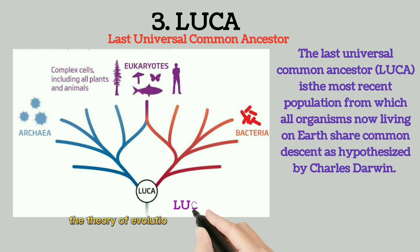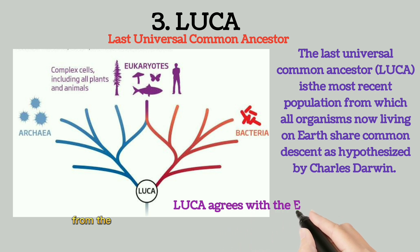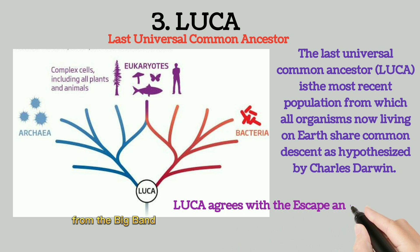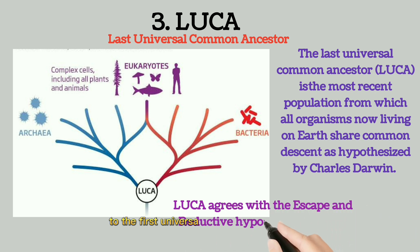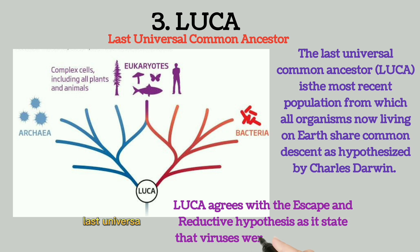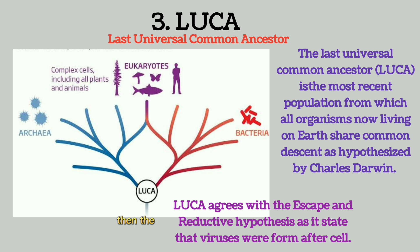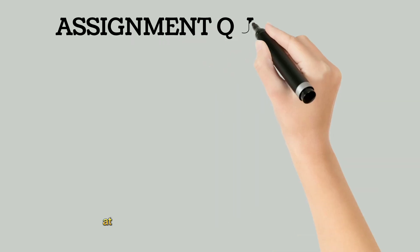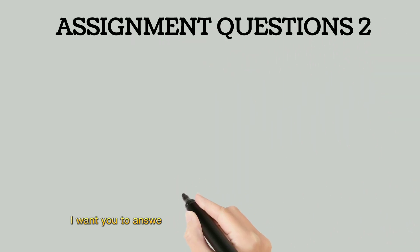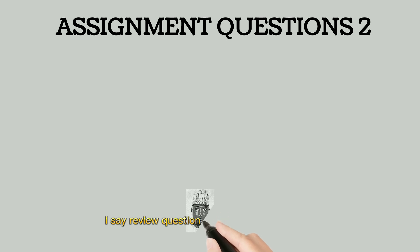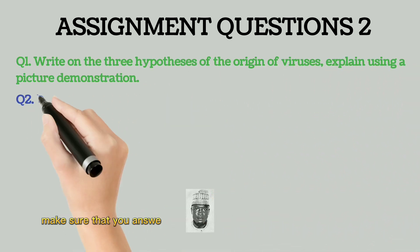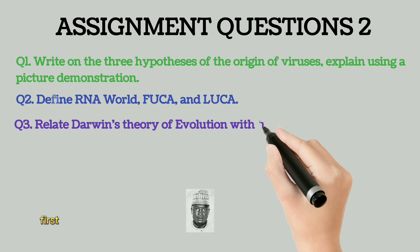The theory of evolution descends from the Big Bang to the RNA world, to the First Universal Common Ancestor, to the Last Universal Common Ancestor, then the formation of the ancestral cells, then the Eukarya, the Archaea, and bacteria. At the end of this class, I want you to answer the review questions as an assignment. Make sure that you answer them in your book.